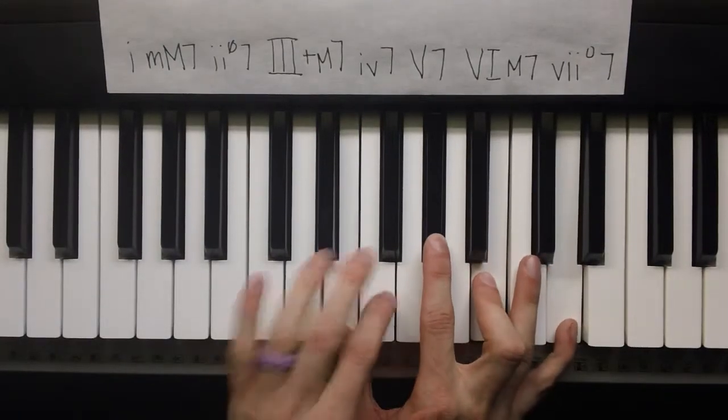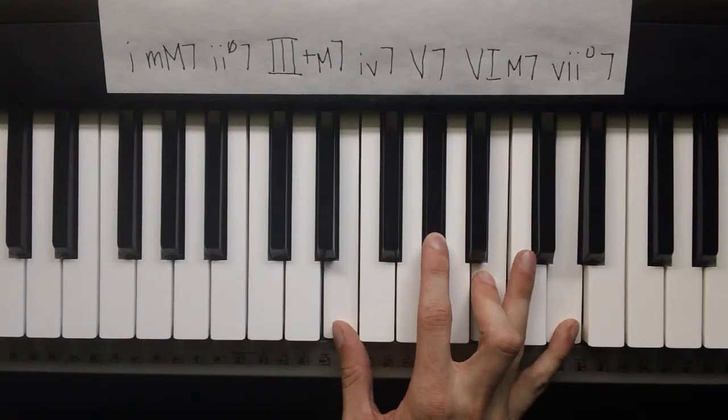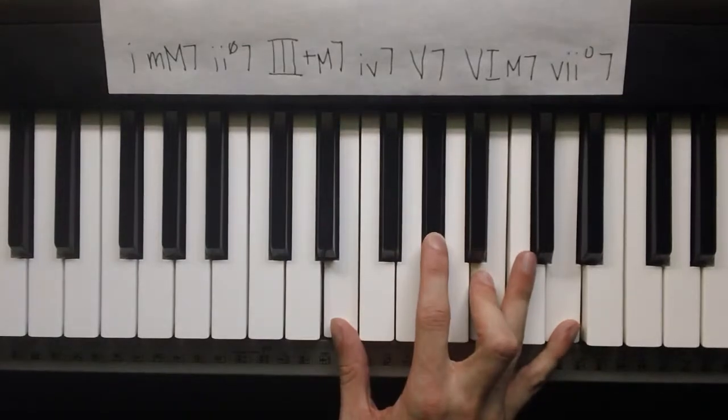Now the fifth one is a 3-2-2. So that is a dominant 7th, so it gets a capital V7.